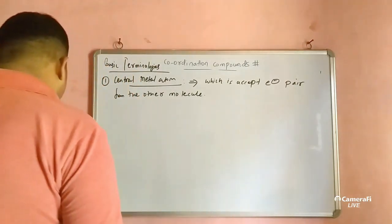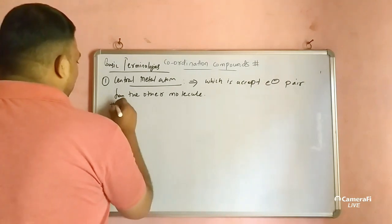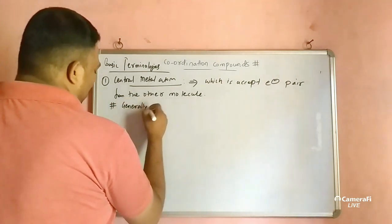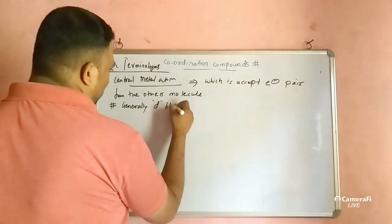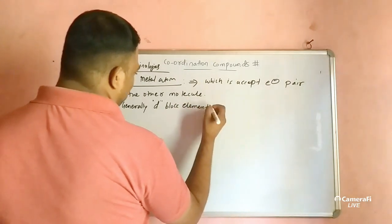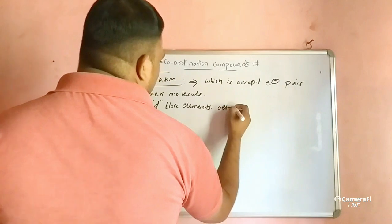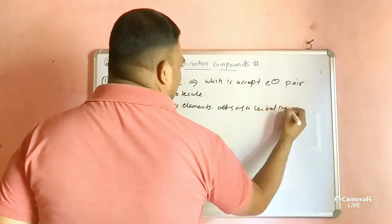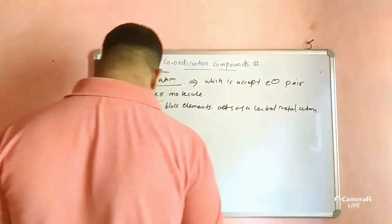Generally, d-block elements act as the central metal atom. This is a very important statement — d-block elements act as central metal atoms.